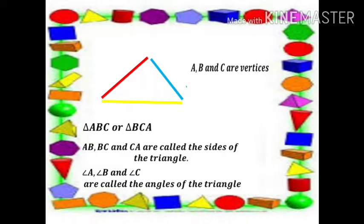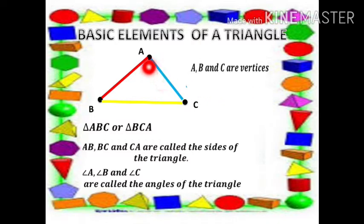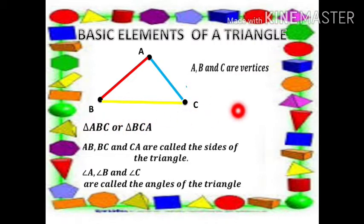Now let's see the basic elements of a triangle. Students, mark 3 points on a paper and name those points as A, B and C. Here A, B, C are vertices. Note carefully that the points do not lie on a straight line. Join the line segments AB, BC and CA.